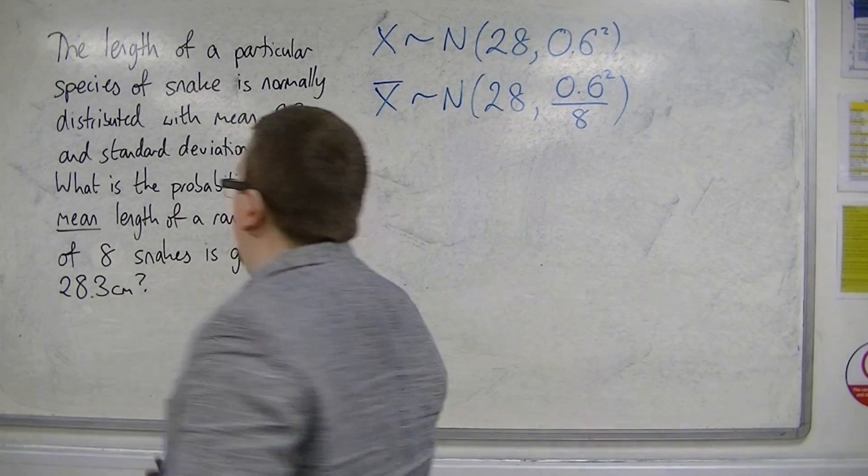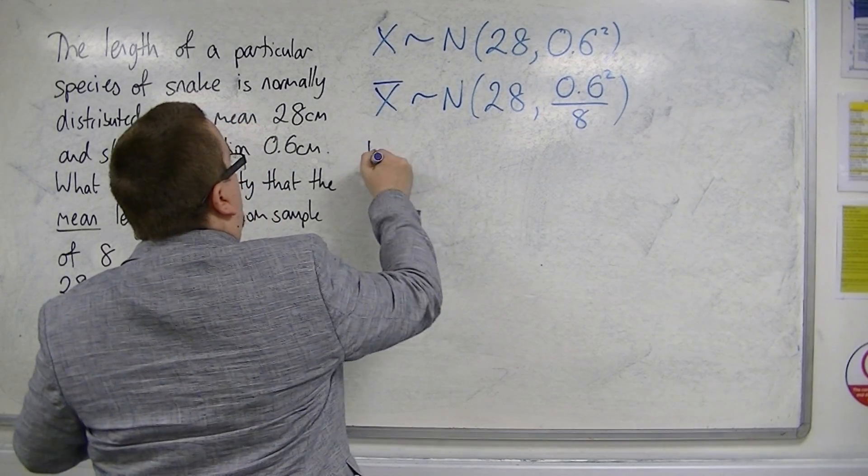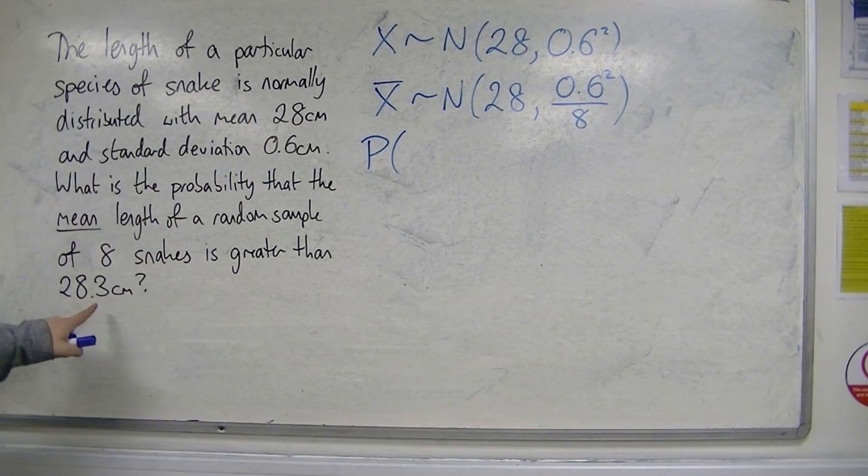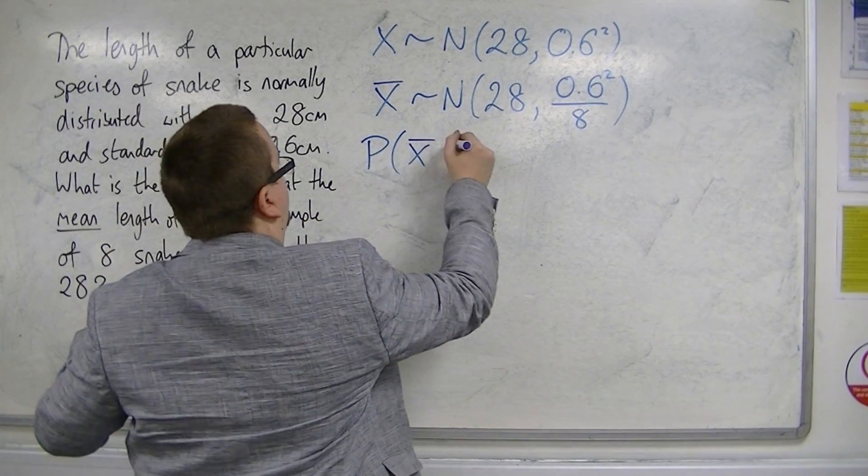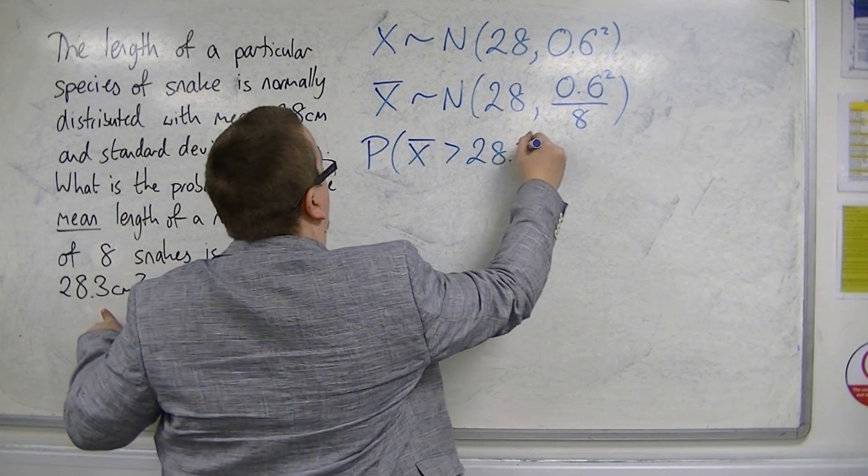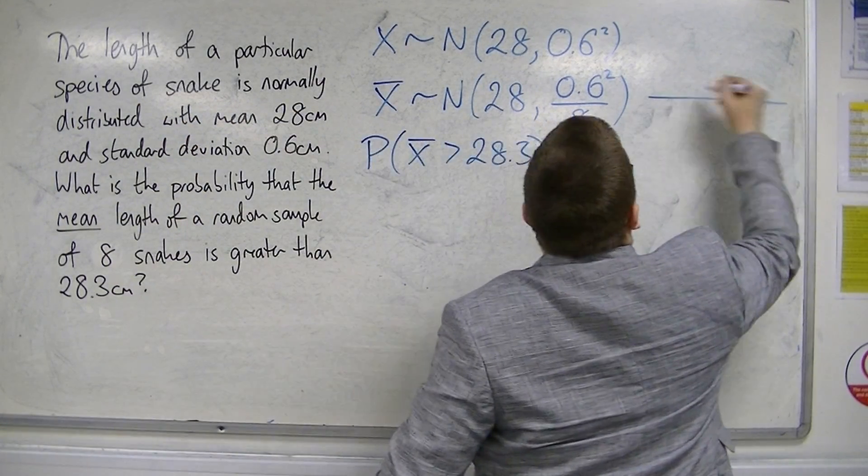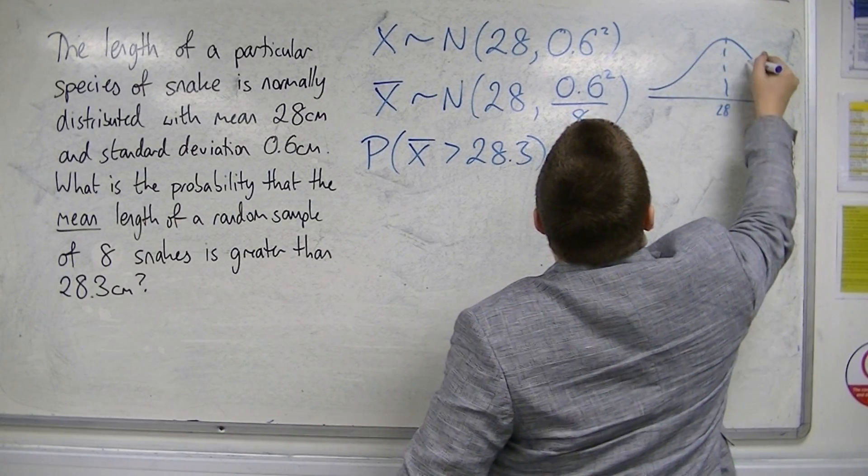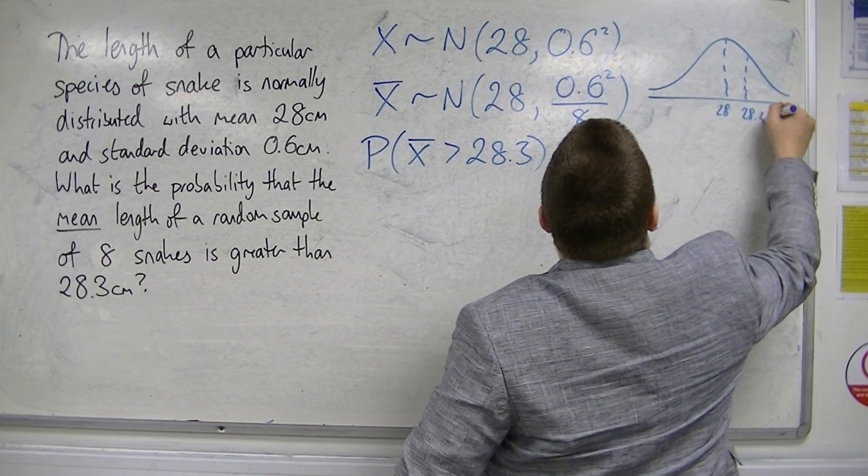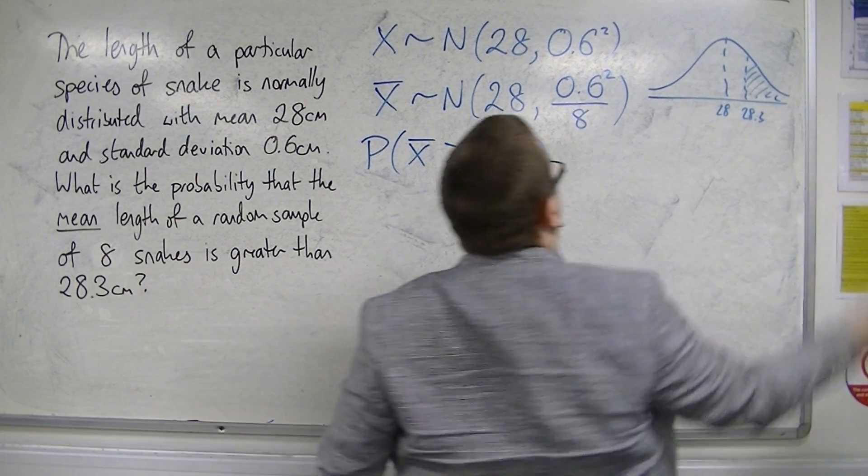Now we're looking at the probability that x-bar is greater than 28.3. If I draw a bell curve, we have a mean of 28, and there's our 28.3, and we want this shaded area.